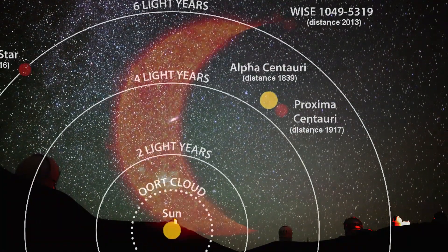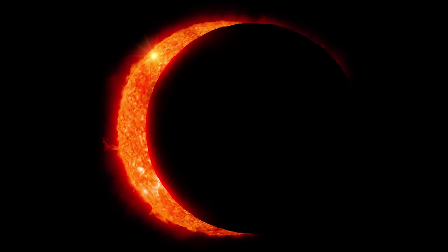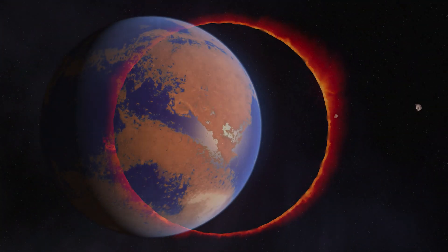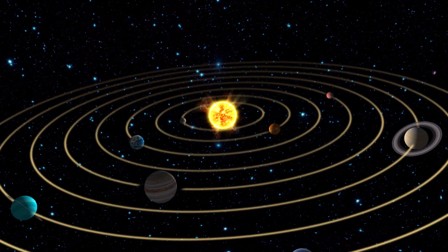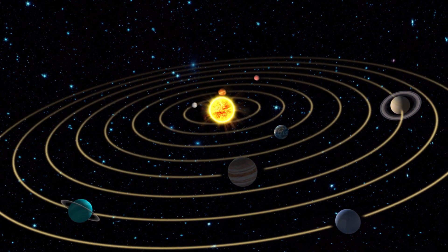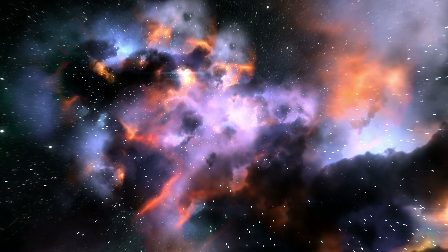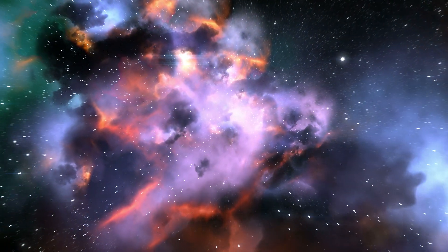You may remember in a previous episode I talked about Proxima b, a planet orbiting the Goldilocks zone of the star Proxima Centauri. It's the closest planet outside of our own solar system where life might possibly exist. But four light years away is still really far.